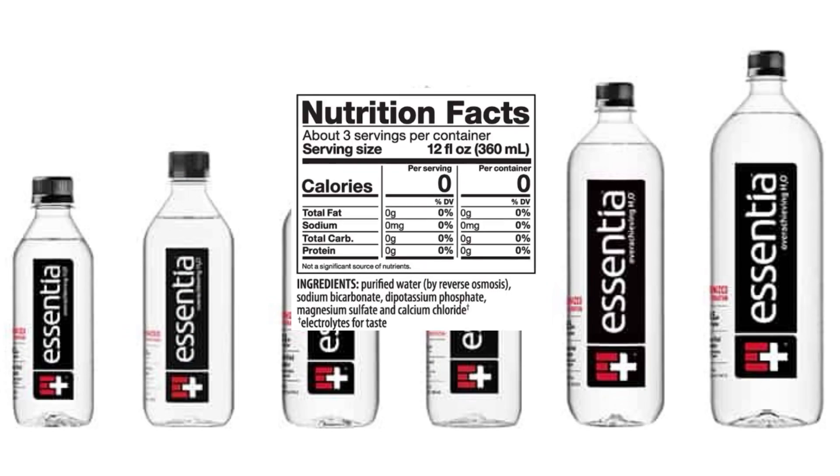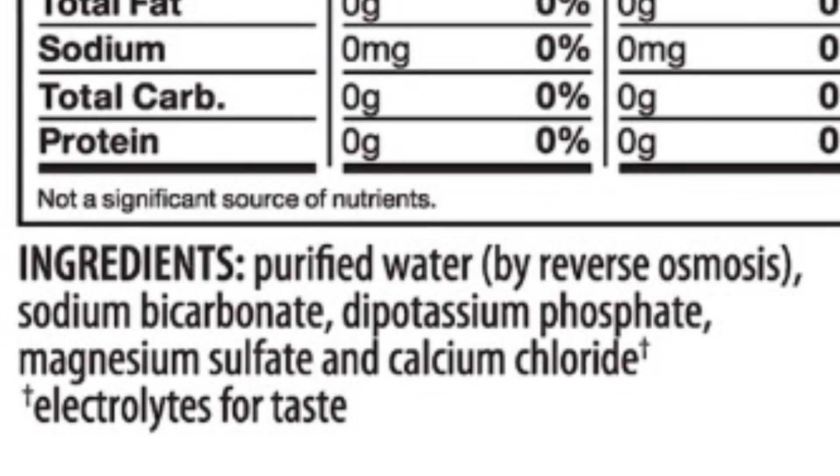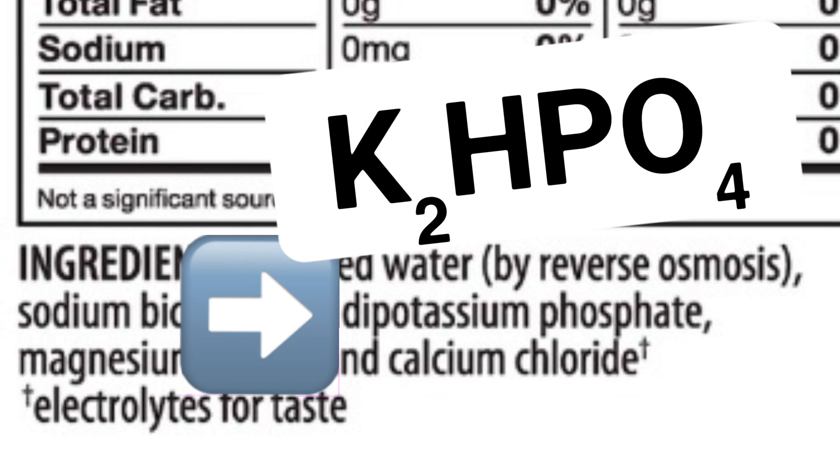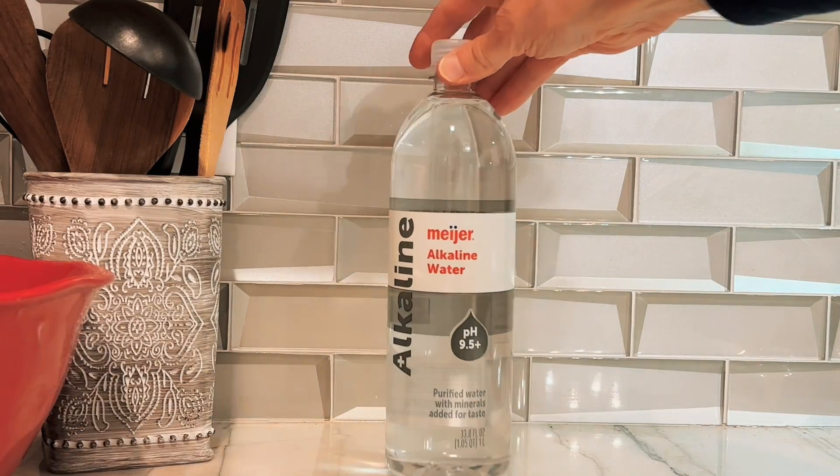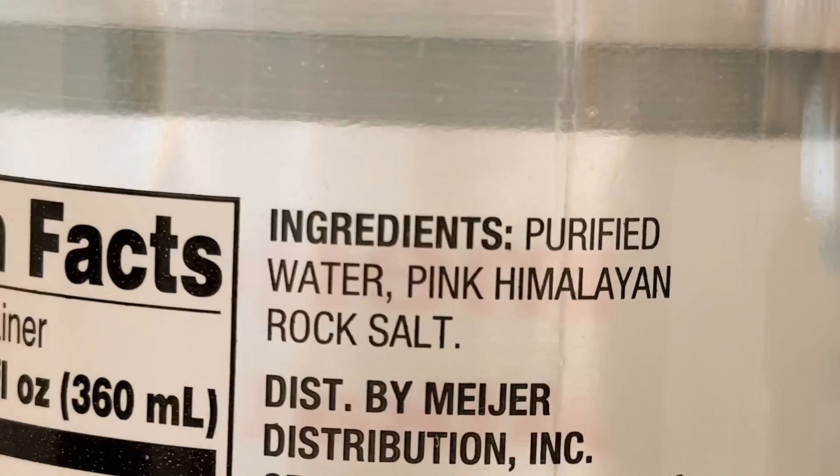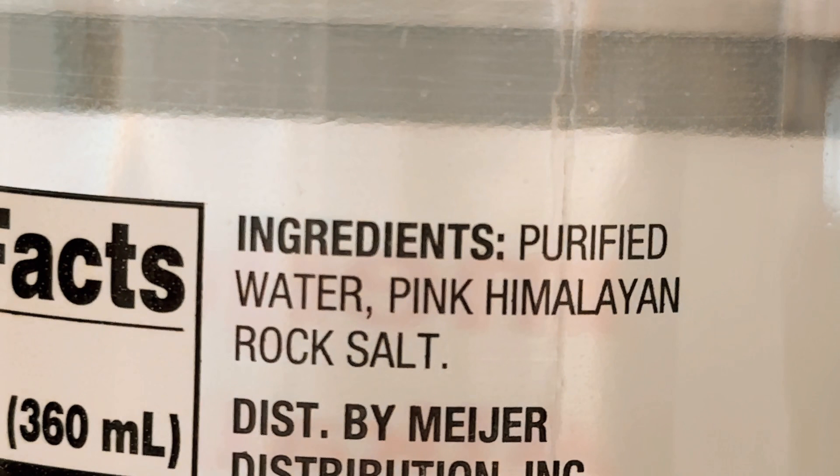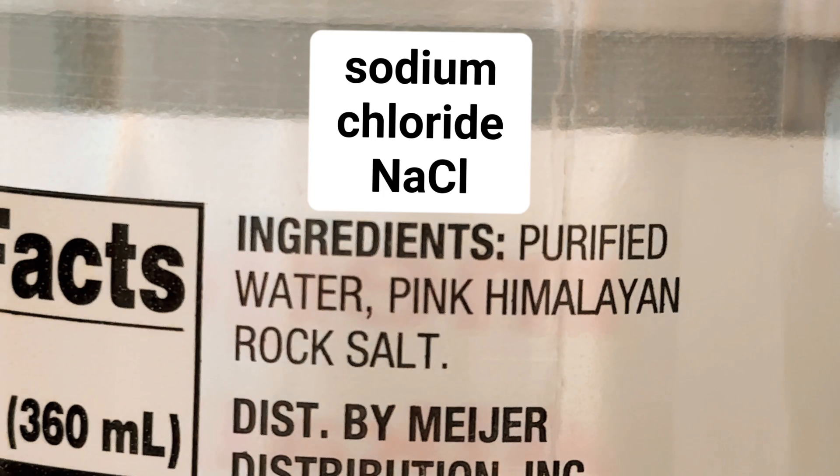First I checked the ingredients list of both brands of water starting with Essentia. I guessed it was the dipotassium phosphate that causes the high pH in this brand of water. On the other hand, the only additive in the Meijer water is pink Himalayan rock salt. This consists almost entirely of sodium chloride, which is neutral.